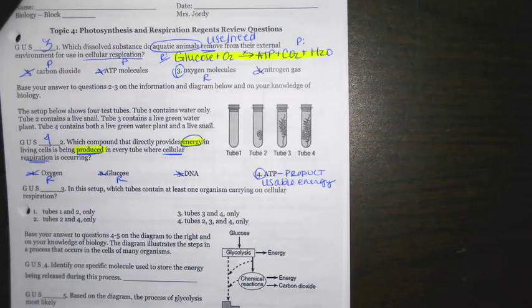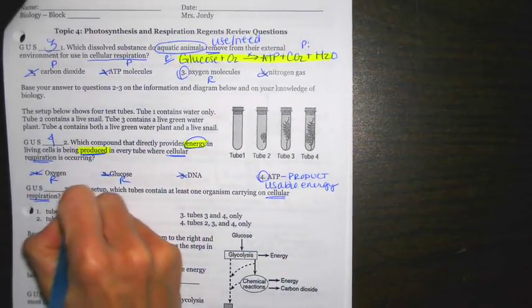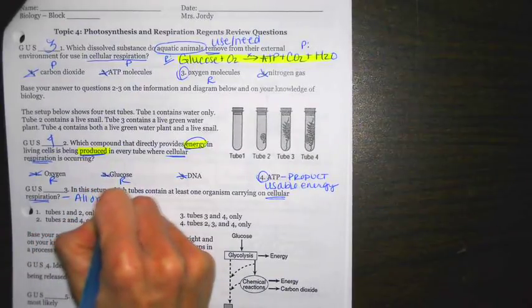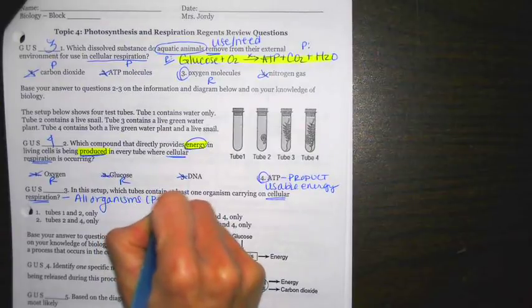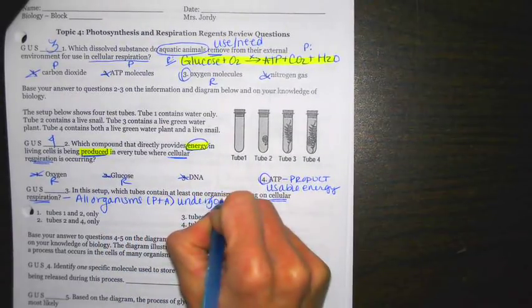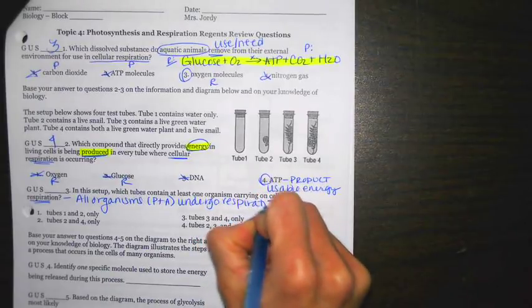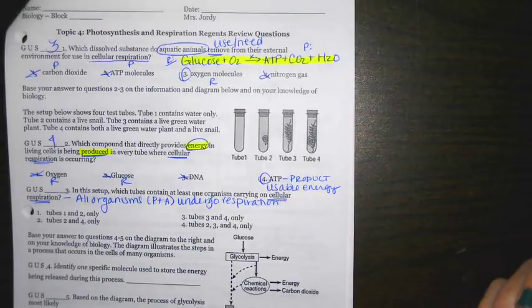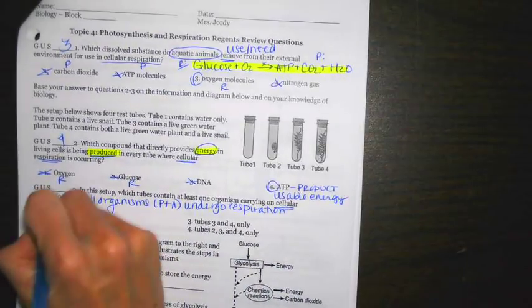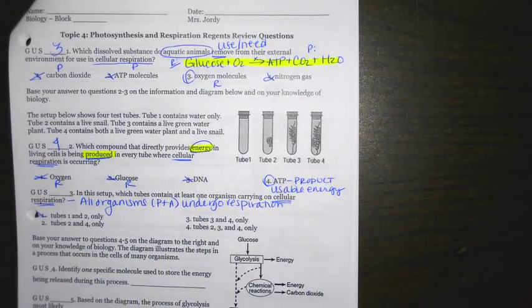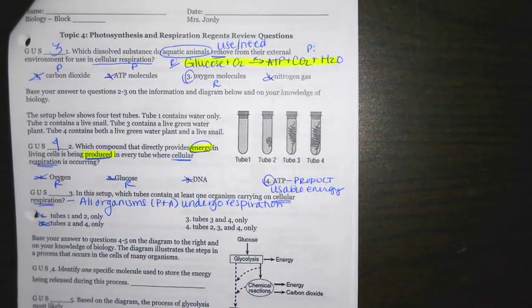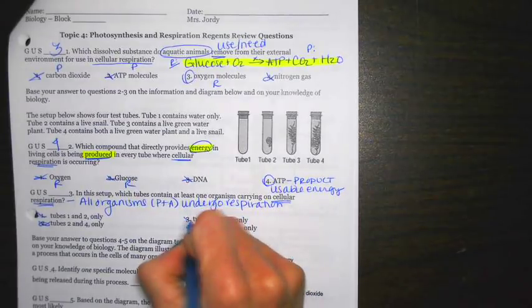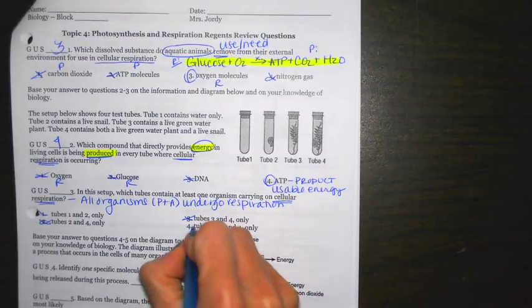In this setup, which tubes contain at least one organism carrying out cellular respiration? Remember, all organisms, so that means plants and animals, undergo respiration. In test tube one, no respiration is occurring. Then if we look at test tube two and test tube four, both of those can undergo respiration, but test tube three is not included in that, and that can undergo respiration. Number three says test tubes three and four only. That's not correct, because the snail also can. Best answer choice there is going to be four.